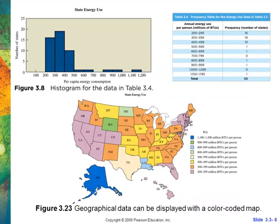Geographic maps can also be used for voting, showing red and blue states. You want to see where people are grouped and whether they have similar interests. We can identify regions like the Rust Belt, the Left Coast, and high metropolitan areas from these maps.